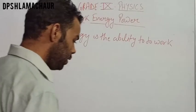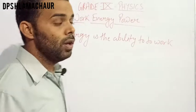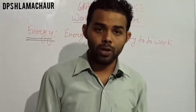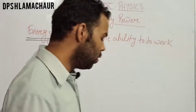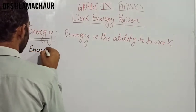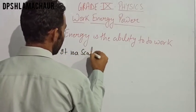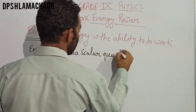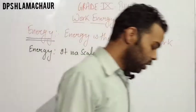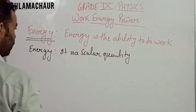Now, what type of quantity is energy — is it scalar or vector? Energy is equal to work, and we studied in the previous video that work is a scalar quantity, so energy will also be a scalar quantity. Energy is a scalar quantity.